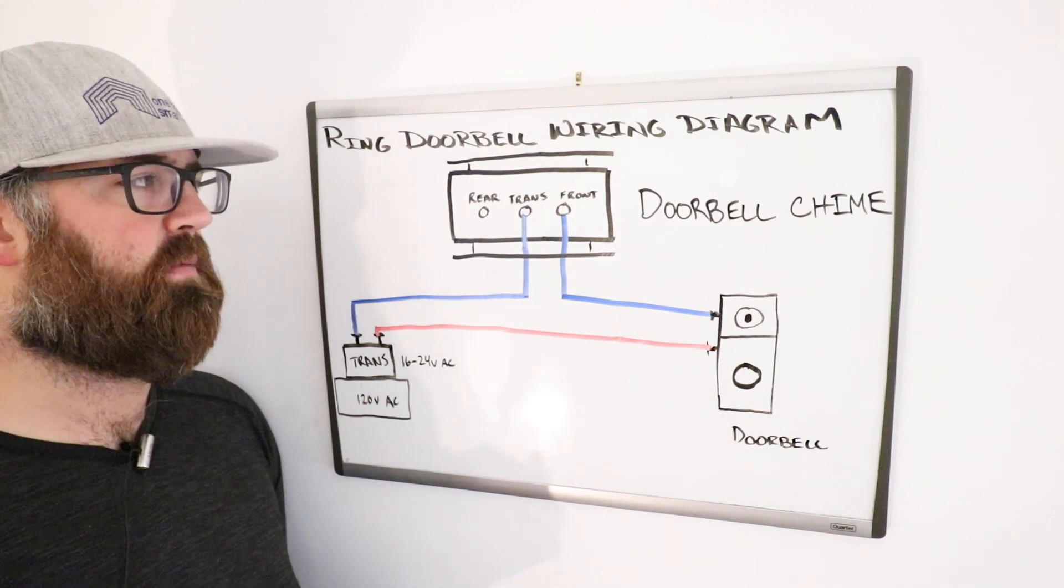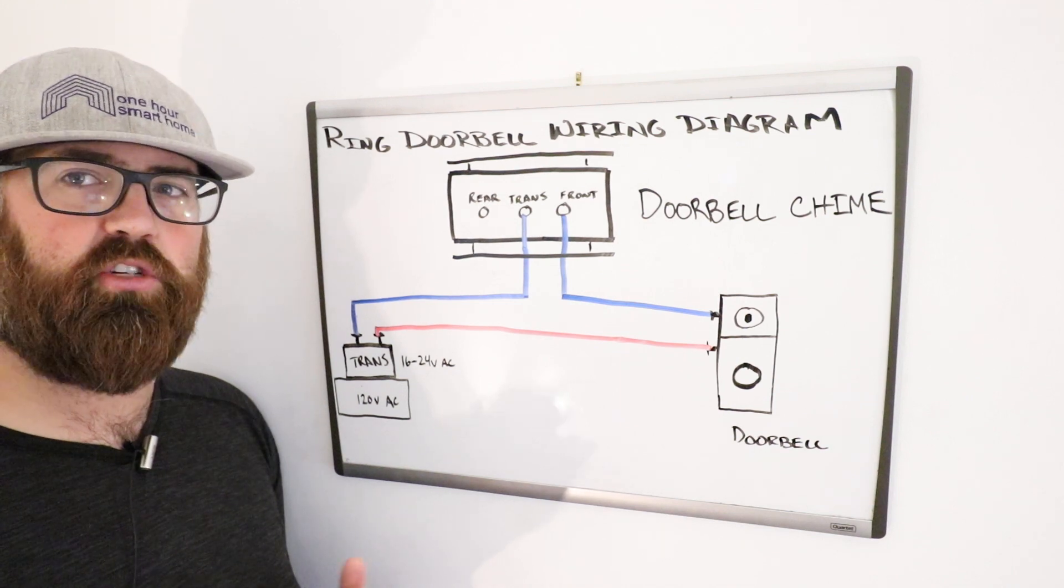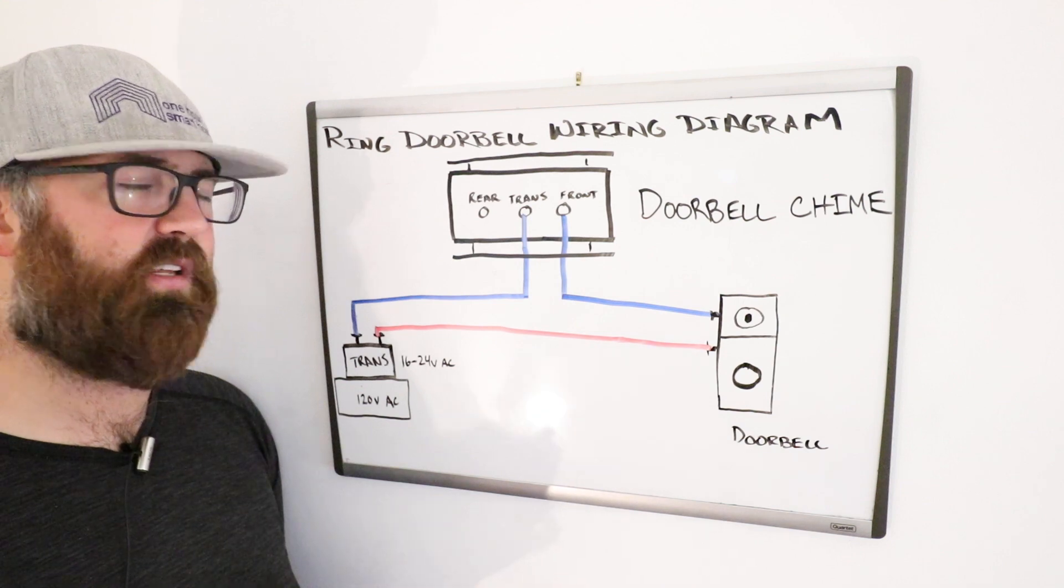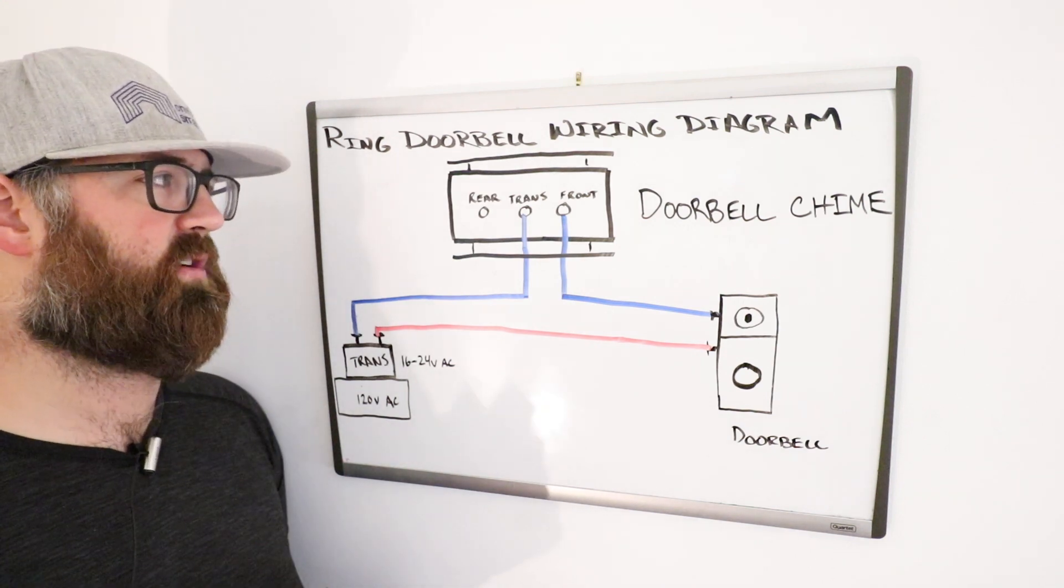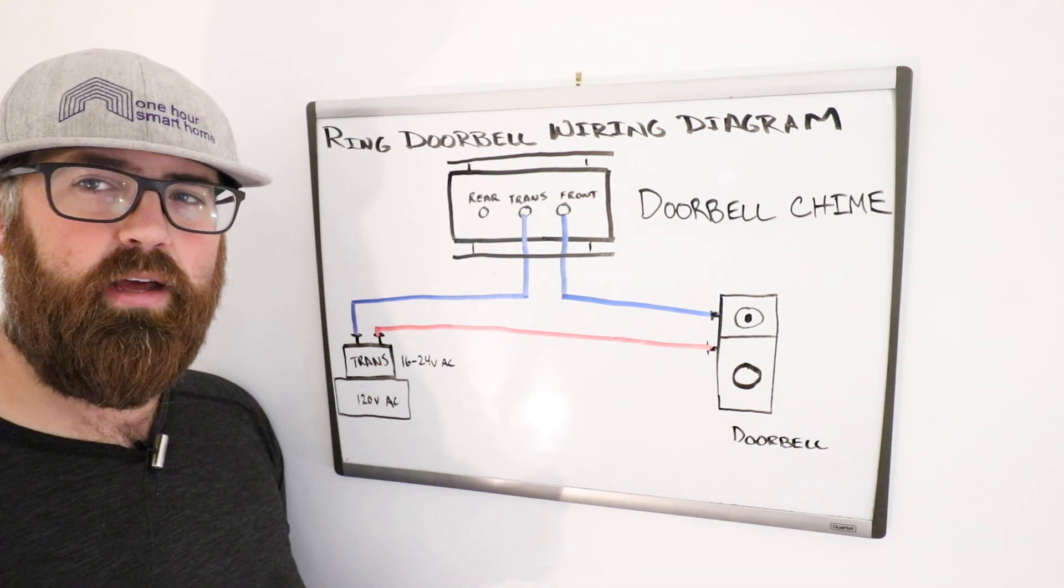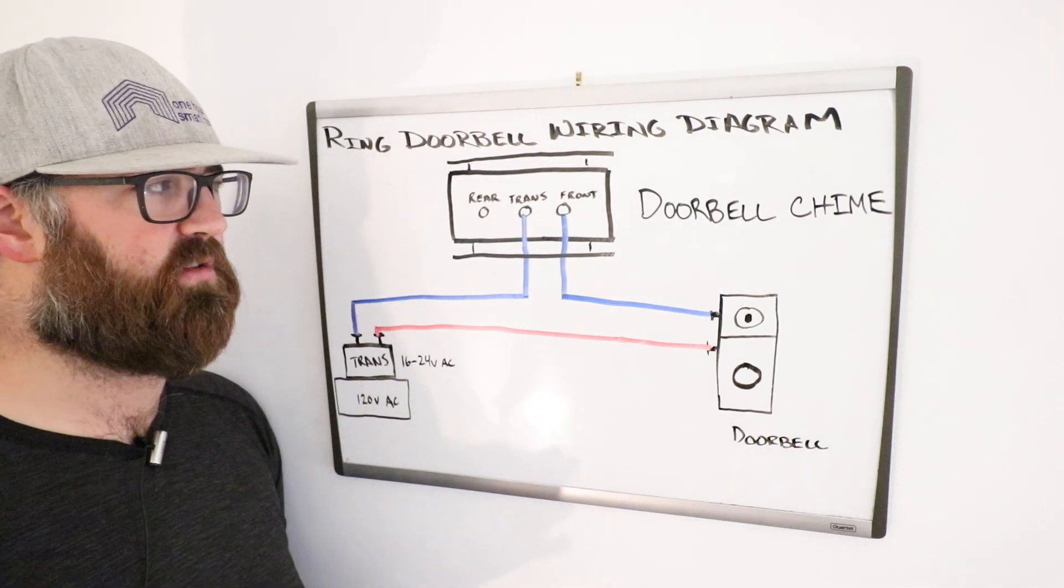And then you've got your doorbell chime. This is one of the things that if you've got an older home, sometimes your doorbell chime can go bad. It's a little bit more rare, but I'd say like that other 10% of the time, if it's not your doorbell transformer, it's your doorbell chime, and it's from somebody just holding down the doorbell button for a long time, and usually that burns out the chime and the doorbell transformer.